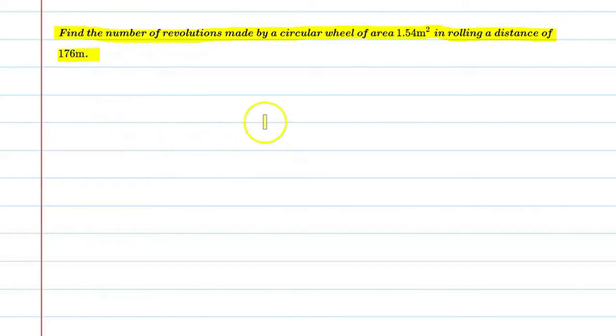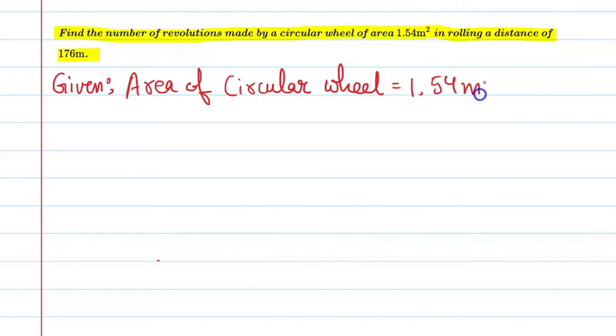So basically, what do we need to do? We need to find the number of revolutions when we roll 176 meters distance. So let's start this question. First of all, we will write the given information. Given is area of circular wheel that is 1.54 meters square.